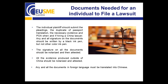Documents necessary for foreign individuals to file a lawsuit in China. The individual plaintiff should submit the pleadings, a duplicate of passport with translation, the necessary evidence, and a power of attorney when hiring a Chinese lawyer. Any and all signatures on documents to be submitted to the court must be written by a black ink pen. The signature on all documents should be notarized in the foreign country and then attested by China's embassy in that country. All evidence produced outside of China should be notarized and then attested.